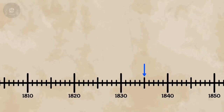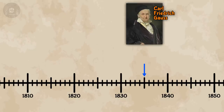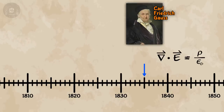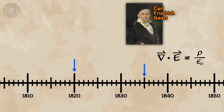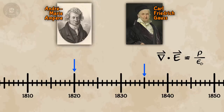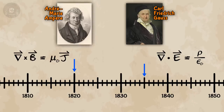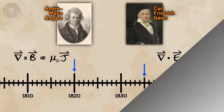To the timeline! In 1835, Gauss's law showed us electric fields came from charges. In 1820, Ampere's law showed us magnetic fields came from moving charges — both confirming what we covered earlier.